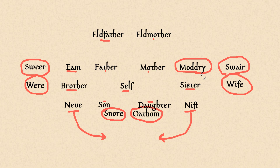You could say madri-daughter, and on the other hand eem-son and eem-daughter. So if you have a female cousin who was born to an uncle, you could call her your eem-daughter.